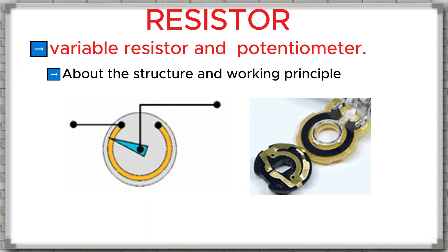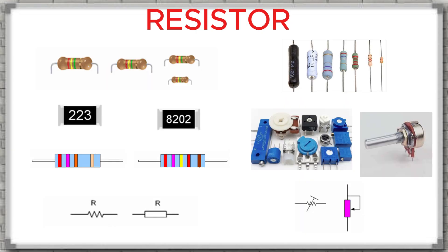So, in today's lesson, I have helped you understand resistors from their structure and working principle, to how to identify different types and how to read their values. I hope that after this lesson you will no longer feel unfamiliar with this component. Because the topic of resistors is quite long, I have divided it into two parts so that it is easier for you to follow. In the next part, we will go deeper into the principles of operation, the power rating, and the calculation formulas for resistors — helping you gain deeper knowledge and apply it in real repair work.